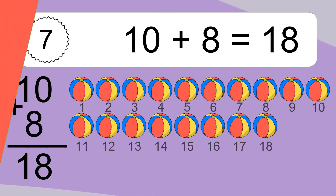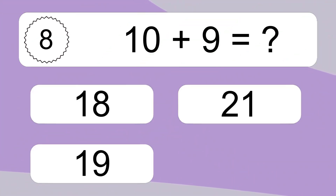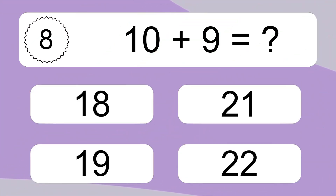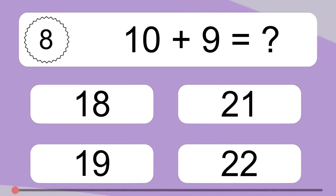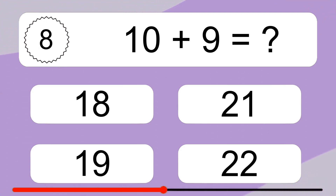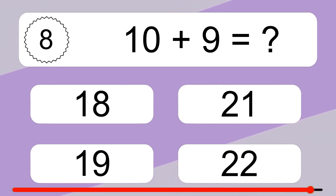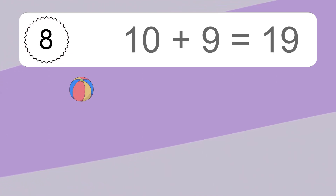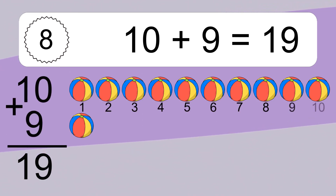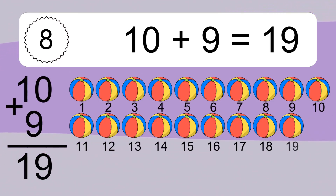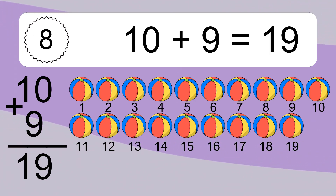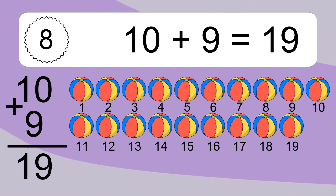10 plus 9 equals what? 10 plus 9 equals 19. Let's count it: 1, 2, 3, 4, 5, 6, 7, 8, 9, 10, 11, 12.